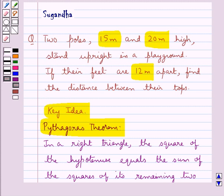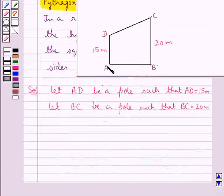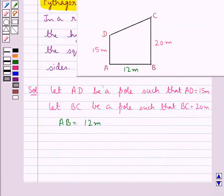In the question we have that their feet are 12 meters apart. So we have AB is equal to 12 meters. We need to find the distance between their tops, that is we need to find CD.